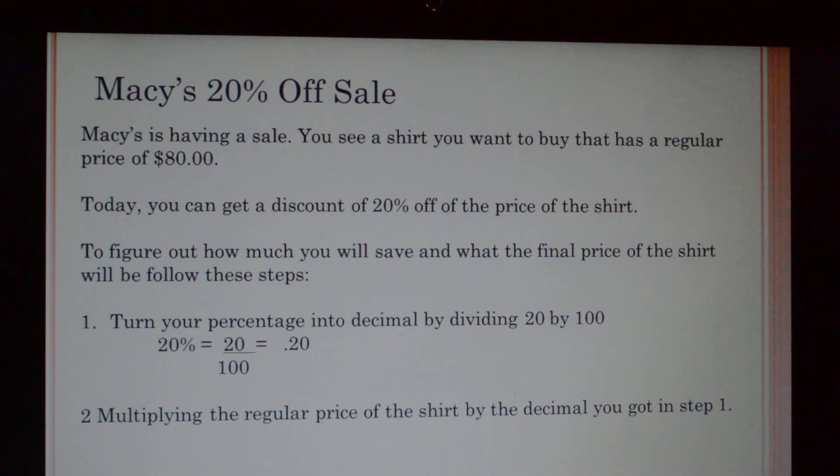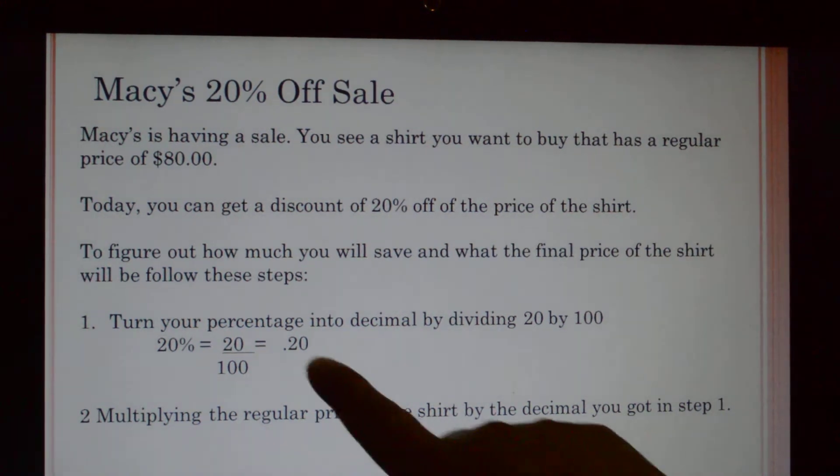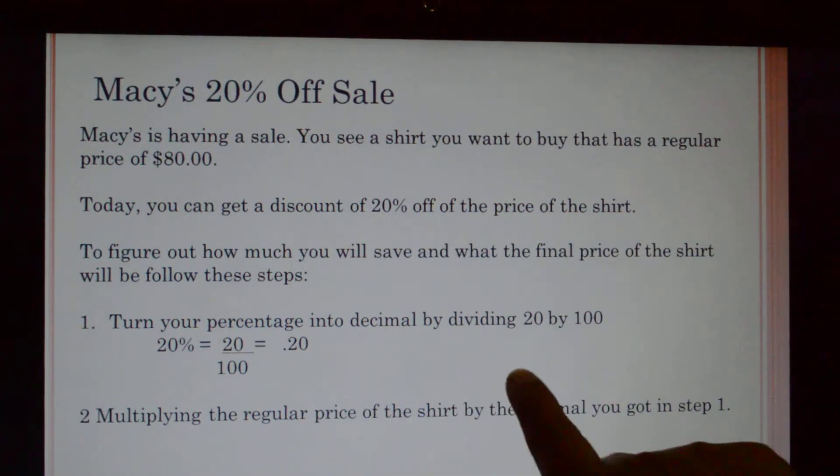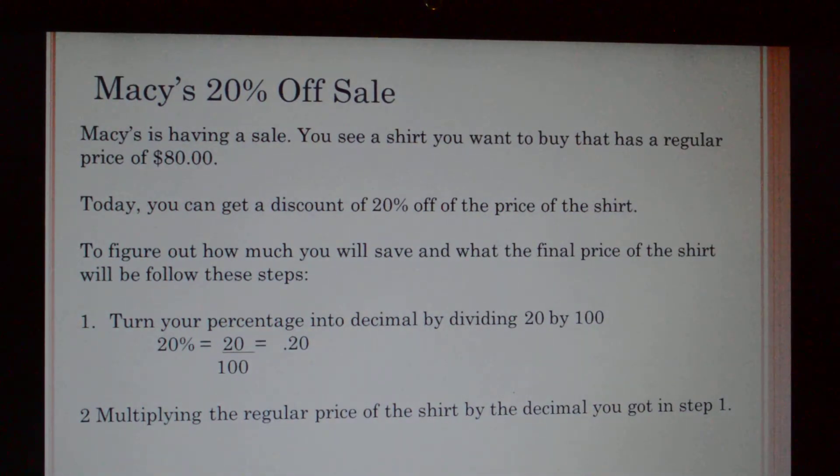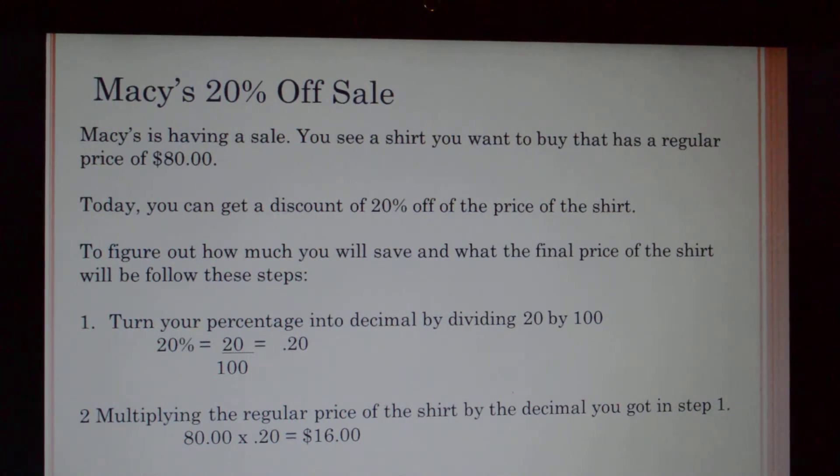Multiply the regular price of the shirt by the decimal you got in step one. So the regular price of the shirt we said was eighty dollars, and we're going to multiply that by 0.20. And that's going to give us sixteen dollars.